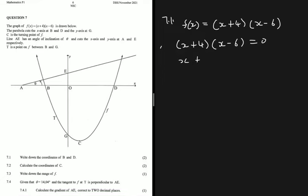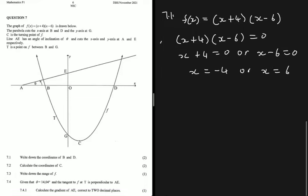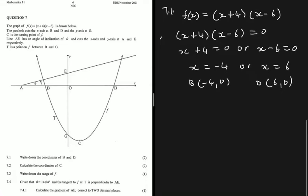So x + 4 = 0 or x - 6 = 0, giving x = -4 or x = 6. The coordinate when x = -4 is B, so B is (-4, 0), and D is (6, 0). B is on the left-hand side of the Cartesian plane on the negative x-values, and D is on the positive x-values.